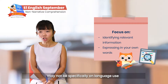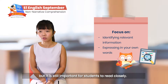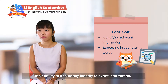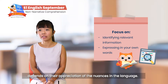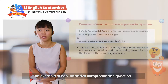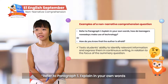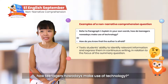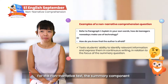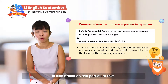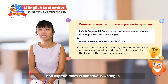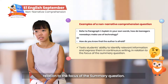The focus for Text 3 questions may not be specifically on language use, but it is still important for students to read closely. While contextual clues may point students in the right direction, their ability to accurately identify relevant information depends on their appreciation of the nuances in the language. For the non-narrative text, the summary component is based on this particular text, and it tests students' ability to identify relevant information and express them in continuous writing in relation to the focus of the summary question.